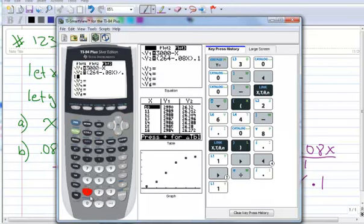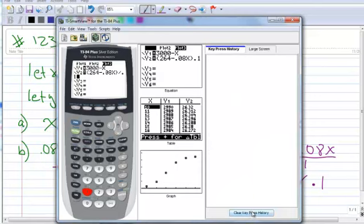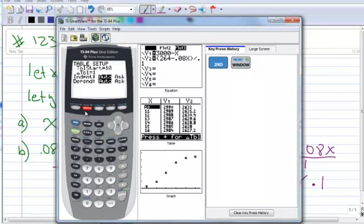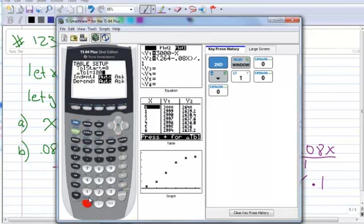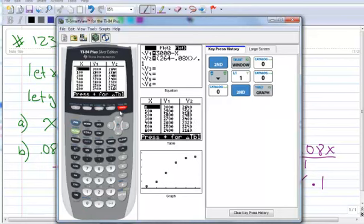Now, here's a cool way to find your window. Because the number one thing students struggle with is finding a window. So we're going to go to second window. This is our table start. We're going to start at 0. We're going to go down to change table and we're going to scroll in 100s. Now let's go look at our table. Second graph takes us to table.